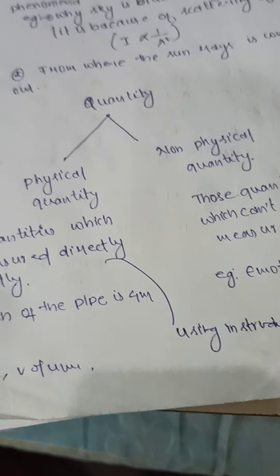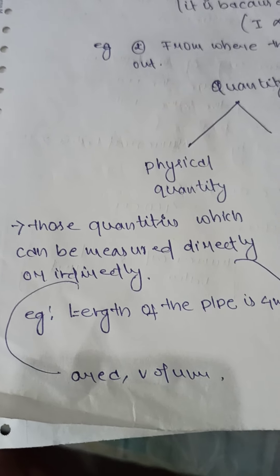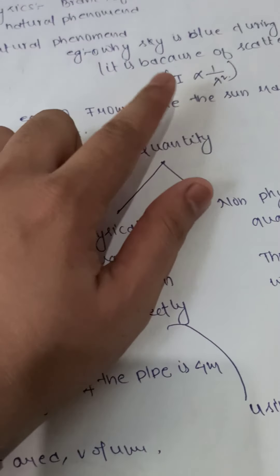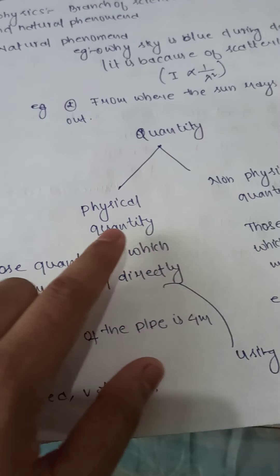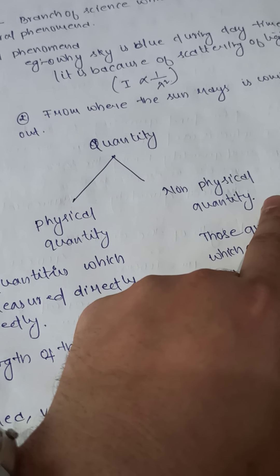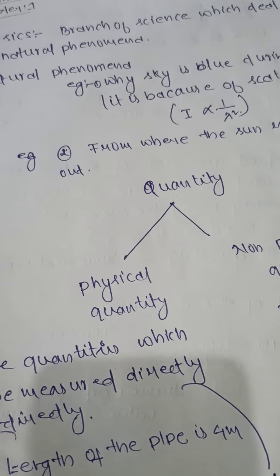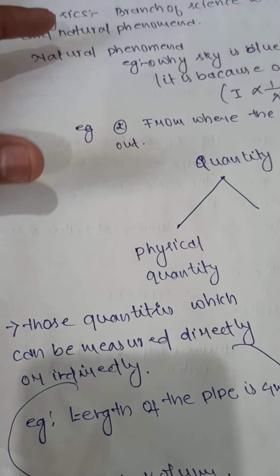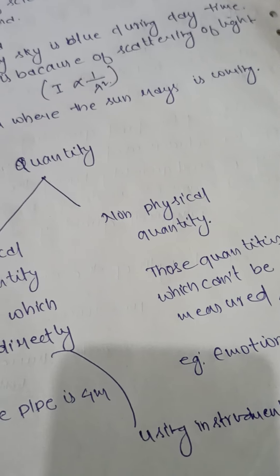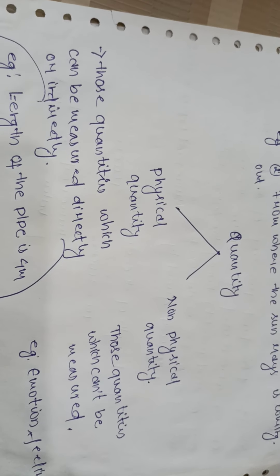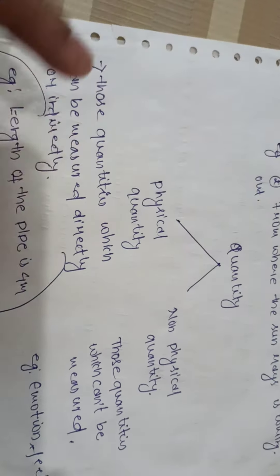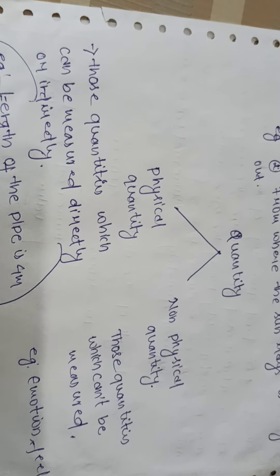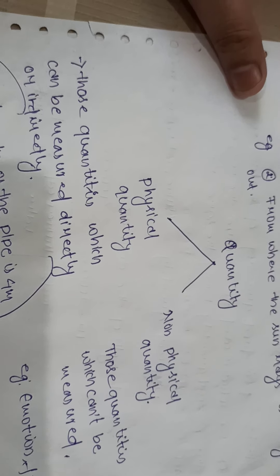To study these things, we divide the quantities involved into two types: physical quantity and non-physical quantity. The key point is: which kind of quantity is considered a physical quantity, and which is considered a non-physical quantity? Physical quantities are those which can be measured, either directly or indirectly.